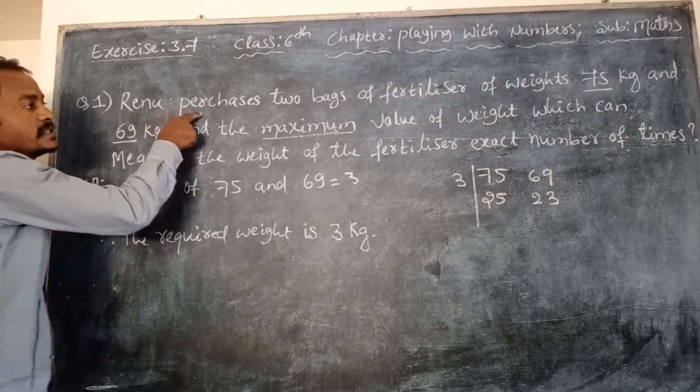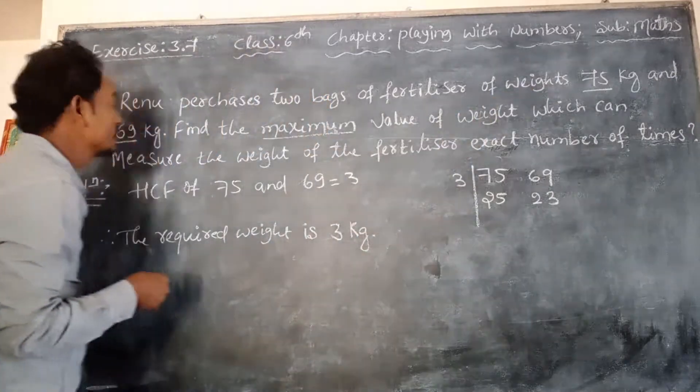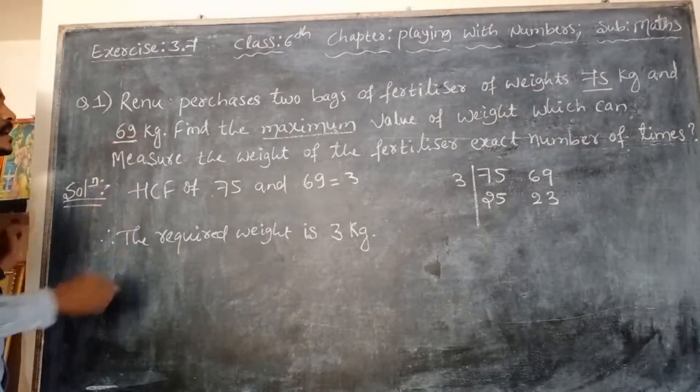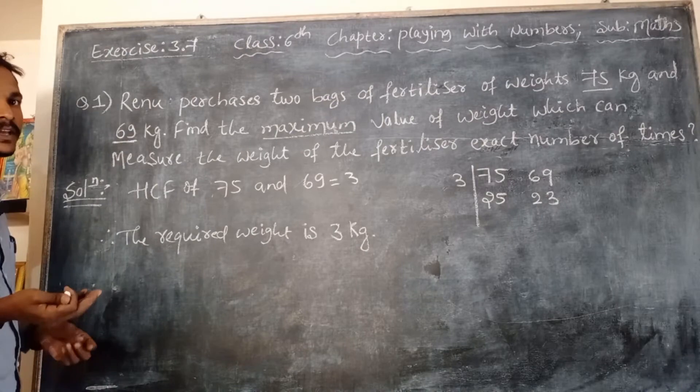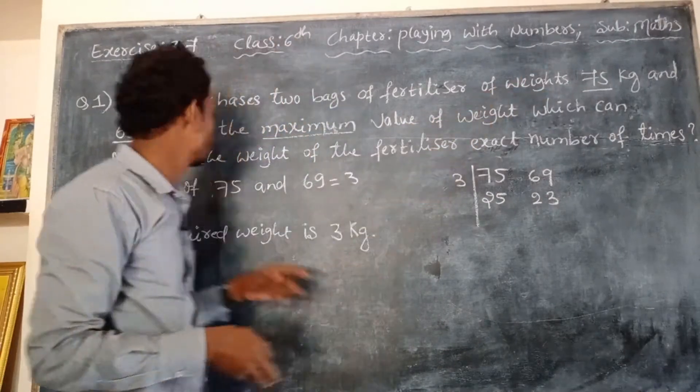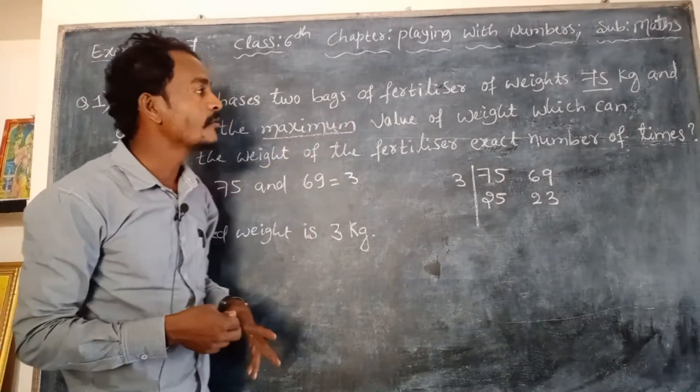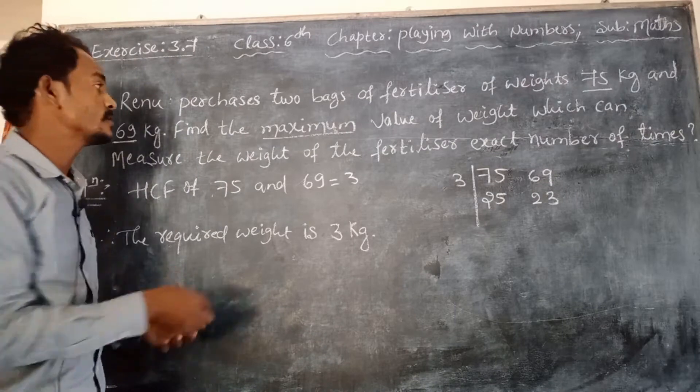Renu purchases two bags of fertilizers of weight 75 kg and 69 kg. So you have to find the maximum value of weight.